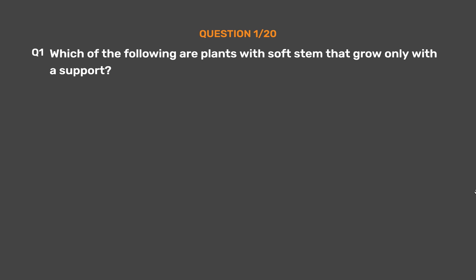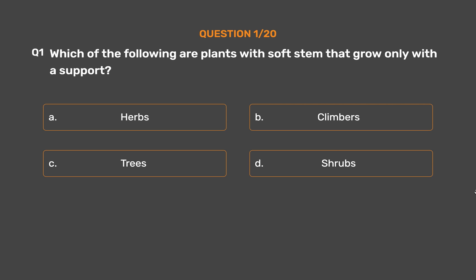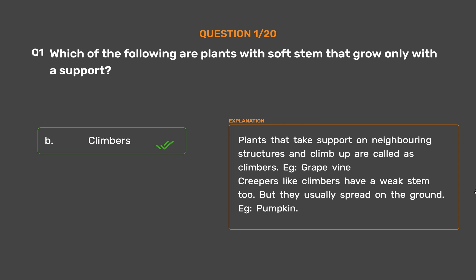Question 1: Which of the following are plants with soft stems that grow only with support? Option A: Herbs, Option B: Climbers, Option C: Trees, Option D: Shrubs. The correct answer is Option B, Climbers. Plants that take support on neighboring structures and climb up are called climbers, e.g., grapevine. Creepers, like climbers, have a weak stem too but they usually spread on the ground, e.g., pumpkin.